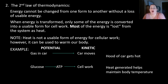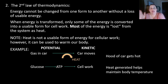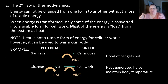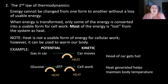Going back to the car example — we put gas in, turn the car on, and it makes the car move. Some of that energy gets let off as heat, which is why the hood of your car gets hot. Similarly, when glucose is converted to ATP and then used for cell work, heat is given off at each stage. This heat helps maintain our body temperature, and it's also why you get really hot when you work out — your cells are doing lots of work.